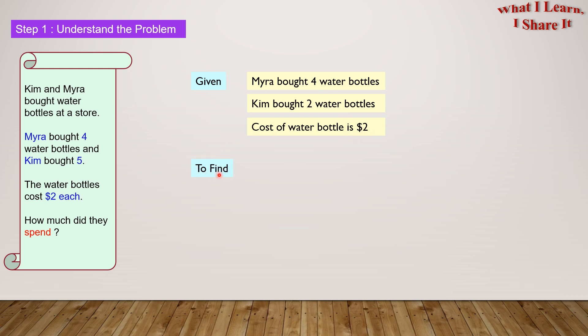What is there to find? We have to find how much they spent. So in our own words we can write: money spent by Myra and Kim.